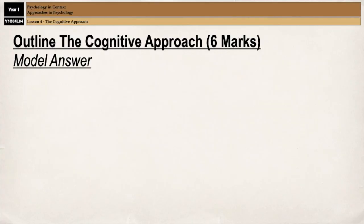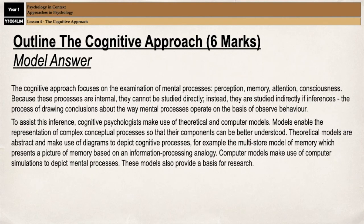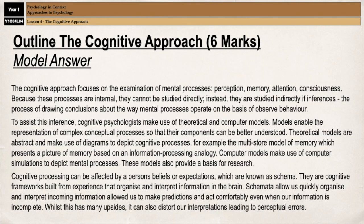Just before we finish, I have a six-mark model answer on outlining the cognitive approach. As with a lot of topics in psychology, it's crucial that you are able to condense a lot of information down to the key details. I would start with a general introduction to the cognitive approach, its basic assumptions and what it suggests. Then move on to talk about theoretical and computer models — what they are, why they're important, what the difference between the two is, and maybe include an example like the multi-store model. As a final paragraph, talk about schema.